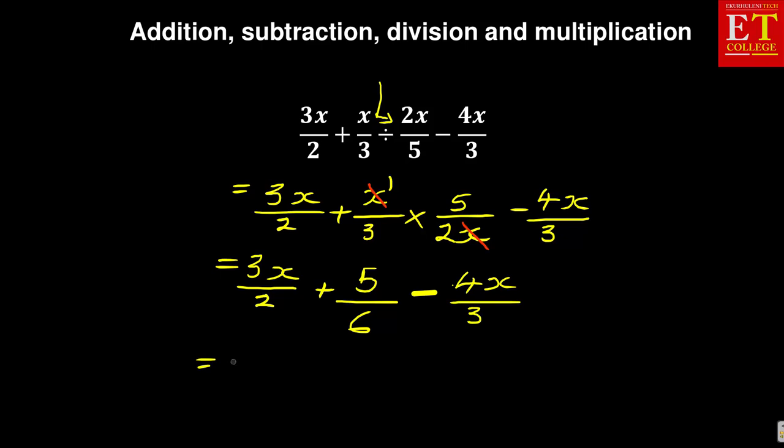The next thing that you need to do is to find the common denominator between 2, 6 and 3. And the common denominator is 6. Then 2 into 6 is 3 and 3 times 3x plus 6 into 6 is 1, 1 times 5 minus 3 into 6 is 2, 2 times 4x.